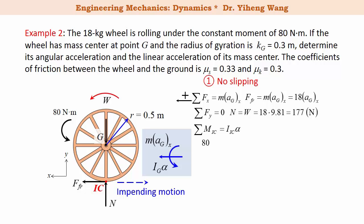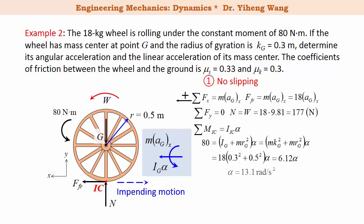There is only the 80 newton meter couple moment in this equation. For IIC, it can be determined through the parallel axis theorem. IG is determined through the radius of gyration. Therefore, substituting in all the known parameters, we can solve for alpha to be 13.1 radian per second squared.